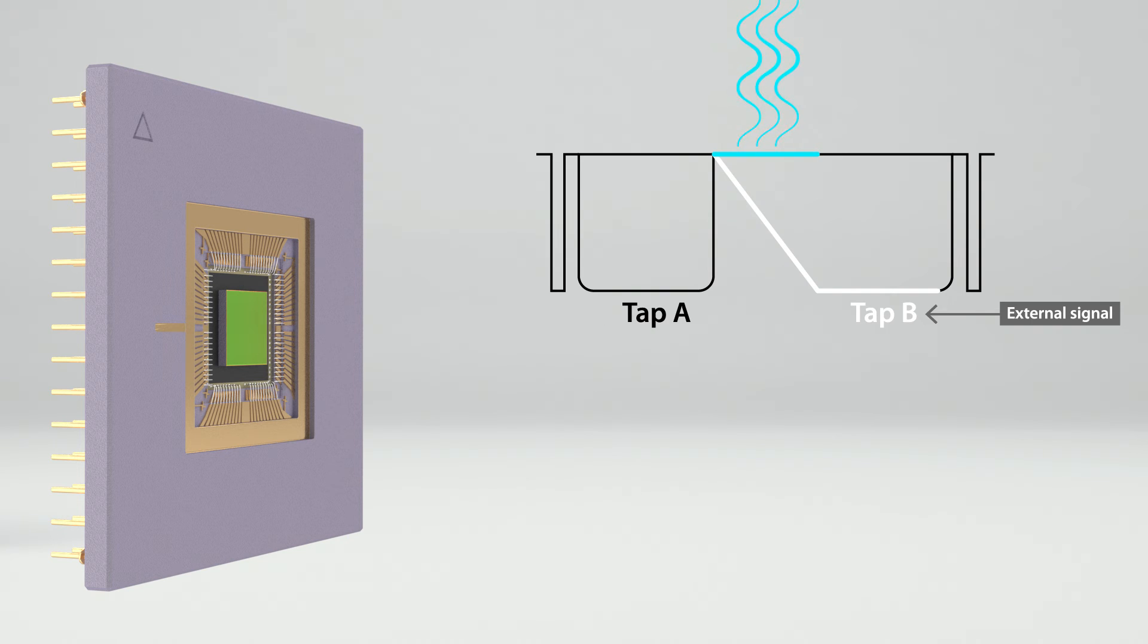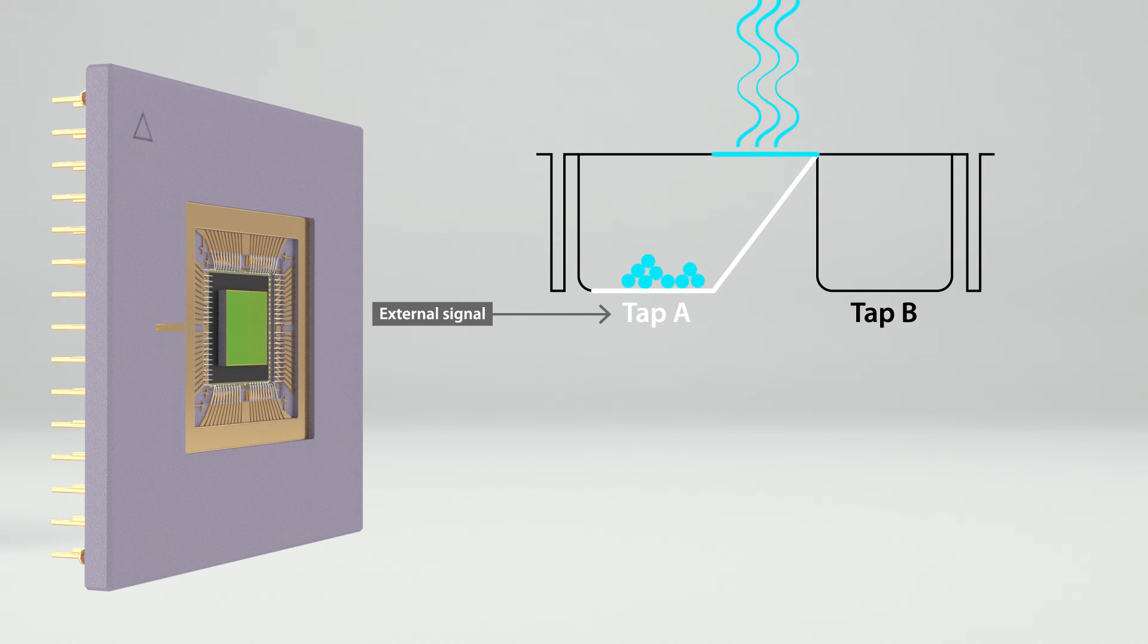By modulating the excitation light and the image sensor at the same frequency, specific phase shifts can be measured in each pixel. At phase 0, tap A is active, all charge carriers are collected in charge bucket A. This is image I1.